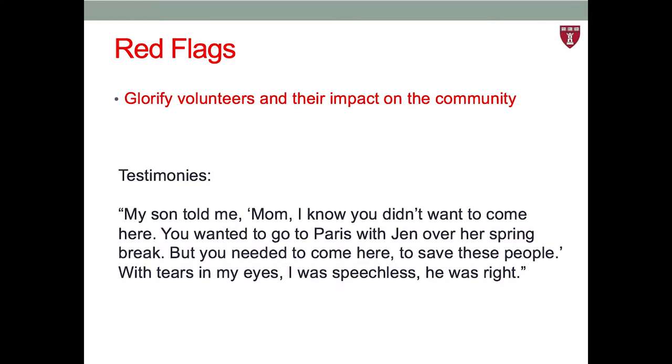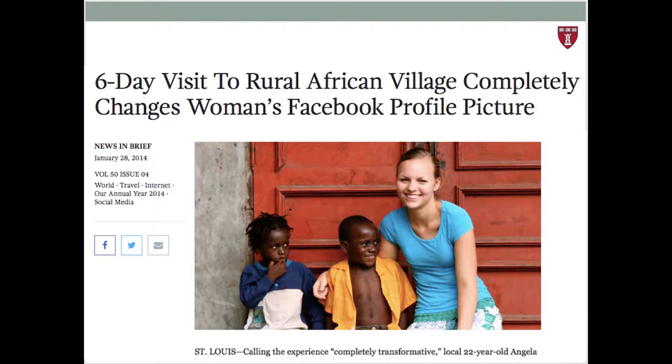You can tell quickly if an organization is too focused on the impact it has on you, rather than within communities, by evaluating images and text on the organization's website or their printed materials. Glorifying volunteers devalues community partnership and local leadership. If their measures for success are all about you, the volunteer, and not the community outcomes, that's a red flag that they are too volunteer-centric and are likely exploiting the local circumstances. So here's an example of a testimony: My son told me, Mom, I know you didn't want to come here. You wanted to go to Paris with Jen over her spring break, but you needed to come here to save these people. With tears in my eyes, I was speechless. He was right. This message perpetuates the myth that struggling communities are sitting around waiting to be saved by volunteers. In reality, as we discuss in Module 2, countries around the world are engaging in robust health improvement endeavors and efforts to achieve the global goals, the SDGs, and the unfinished MDG agenda. Rather than supporting these efforts, organizations that glorify volunteers undermine them instead. Six-day visit to rural African village completely changes women's Facebook profile picture. So here's a sardonic example of a glorified volunteer by the well-known satire news organization The Onion. So while satirical, the article is meant to capture the problematic self-aggrandizement of global health volunteering.